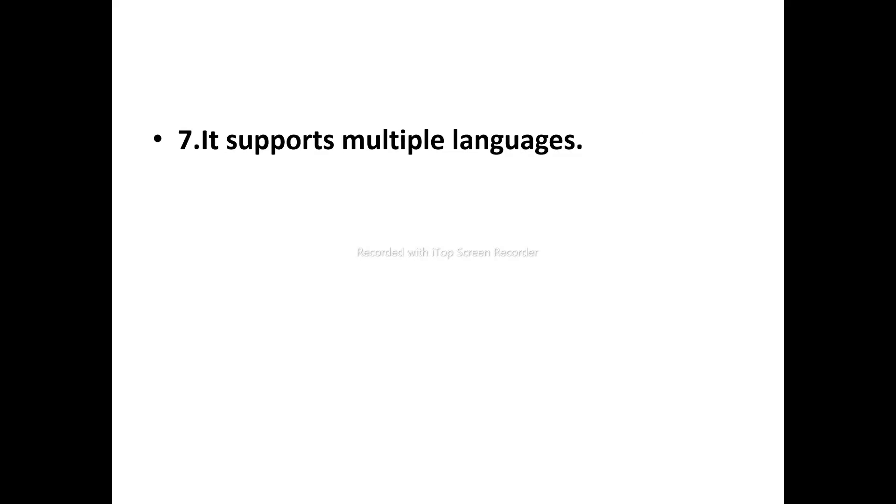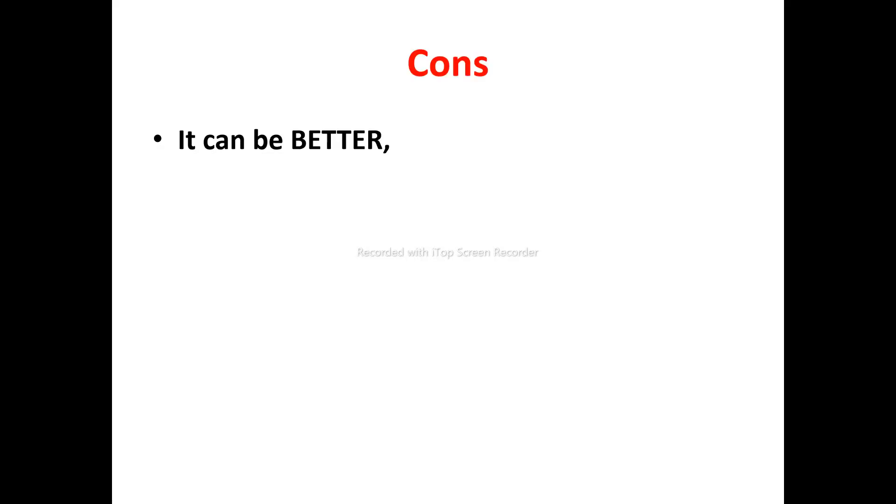Pro number six: you get great customer support. As with any product, there may be difficulties when trying to use it for the first time. The Quick Chat AI customer support team is always available whenever you contact them to resolve whatever issues or difficulties you might be having, ensuring a smooth experience. Pro number seven: Quick Chat AI supports multiple languages, allowing you to easily attend to your website visitors across the globe, no matter their location or language, reaching a diverse audience internationally.